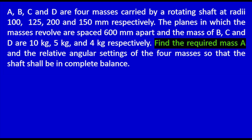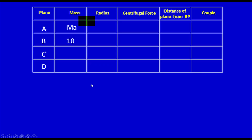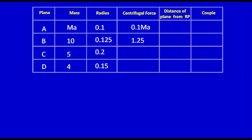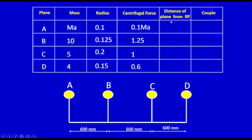The radius of rotating shafts are: R_A equal to 0.1 m, R_B equal to 0.2125 m, R_C equal to 0.2 m, and R_D equal to 0.15 m. I will mark these values in the table. In the next column, we calculate the centrifugal force, which is the product of mass and radius. Therefore: M_A × 0.1 = 0.1·M_A, 10 × 0.125 = 1.25, 5 × 0.2 = 1.0, and 4 × 0.15 = 0.6.